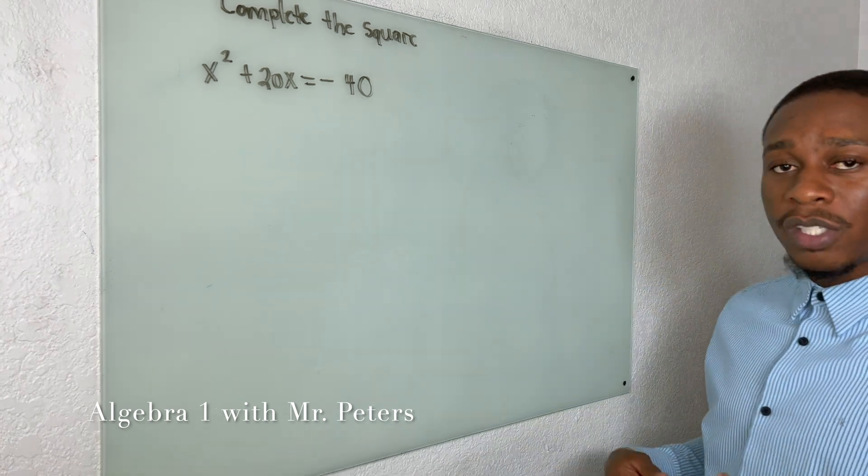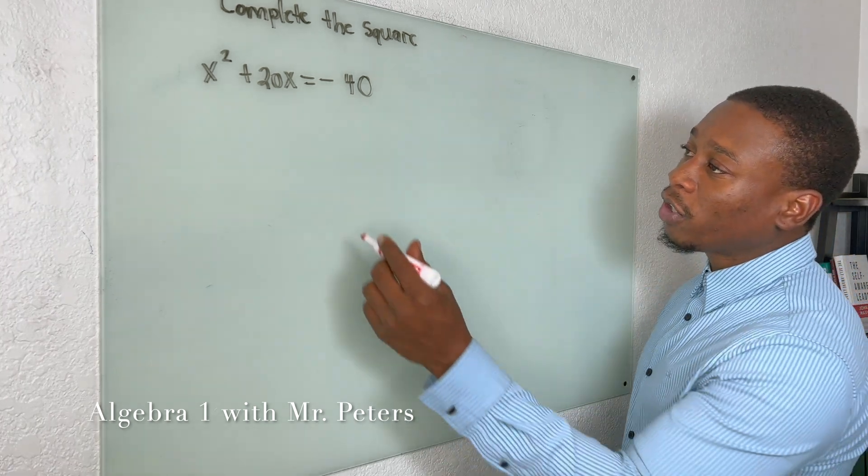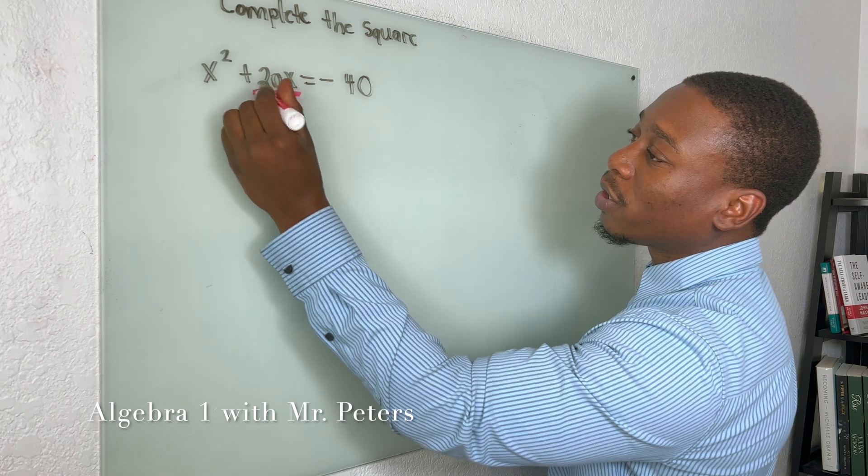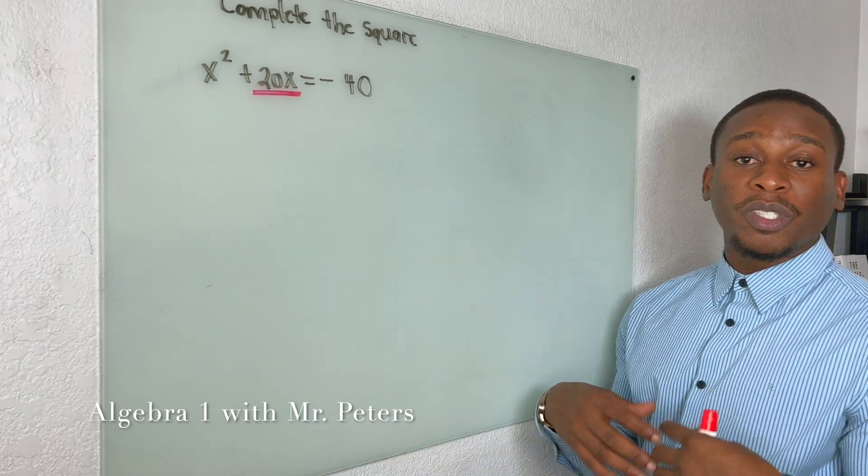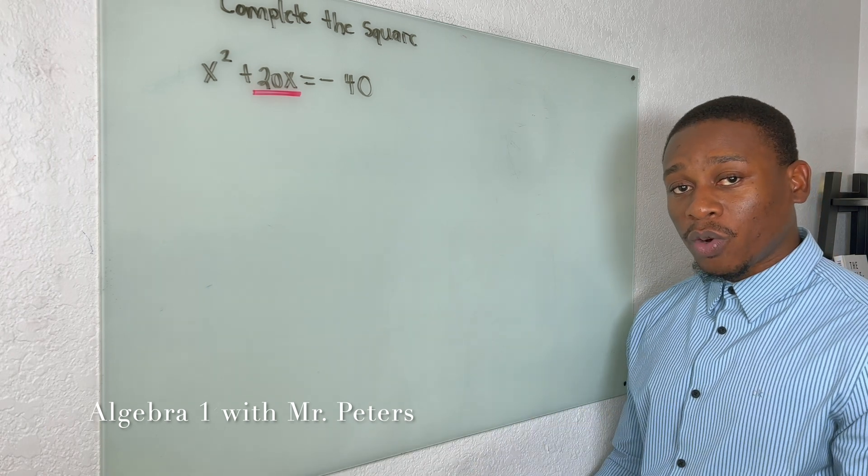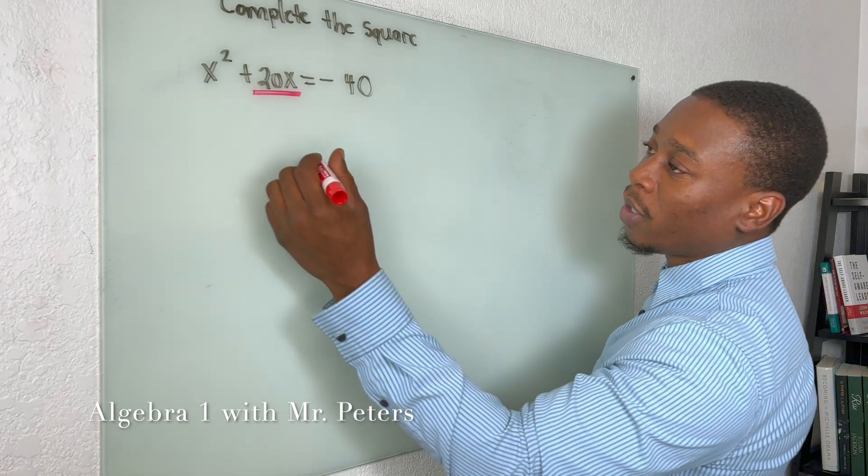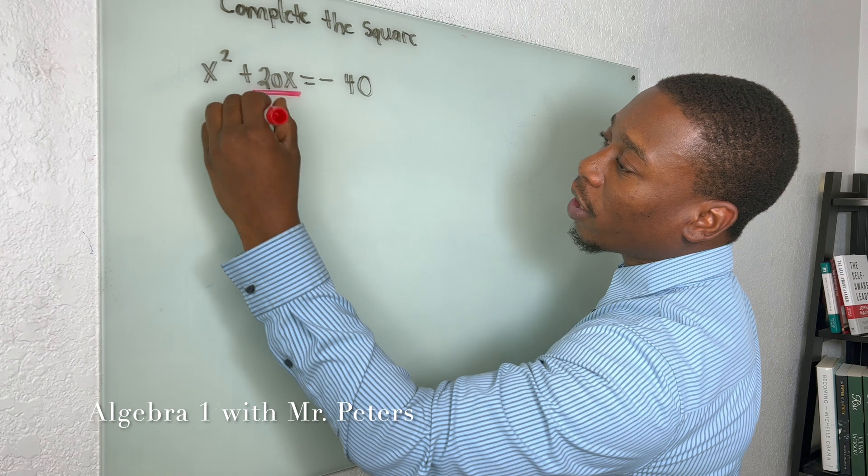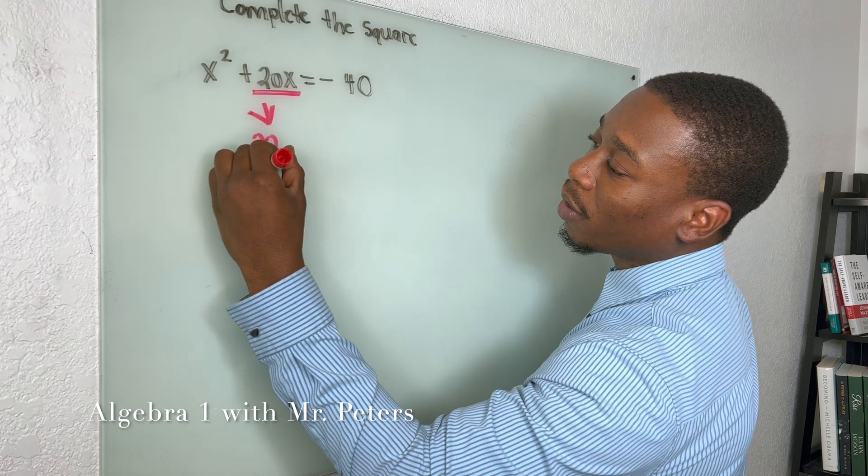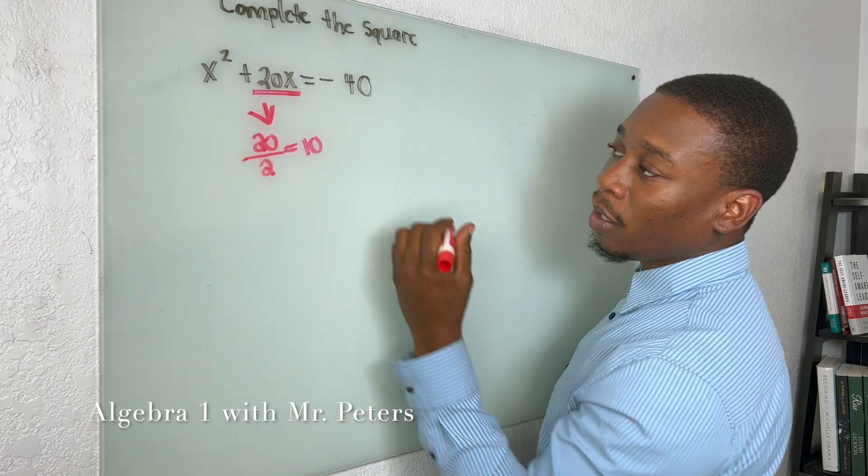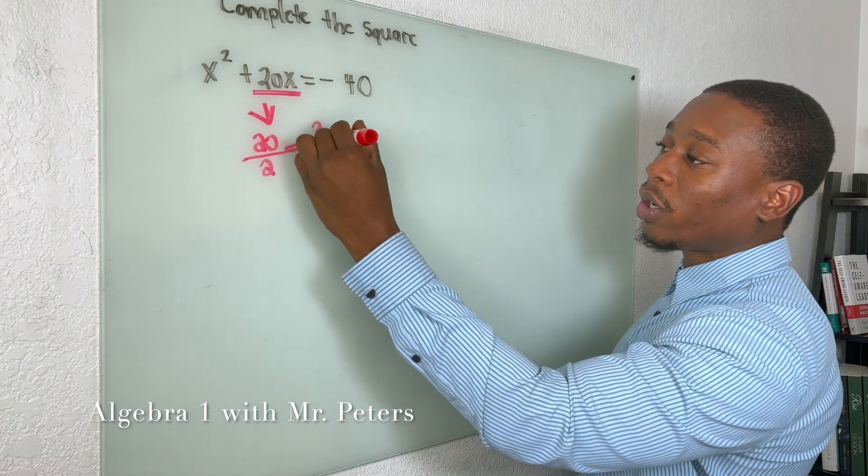Problem number one tells us to complete the square. For us to complete the square, we need to pay attention to this middle term because it's going to help us create our trinomial and help us solve the problem. To create the trinomial, we need to understand what is half of 20? That's 10.